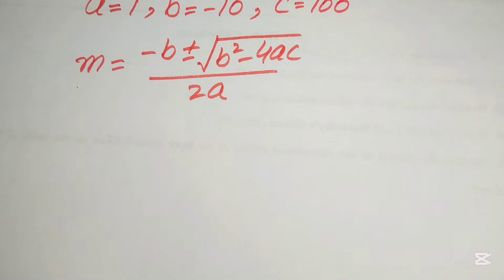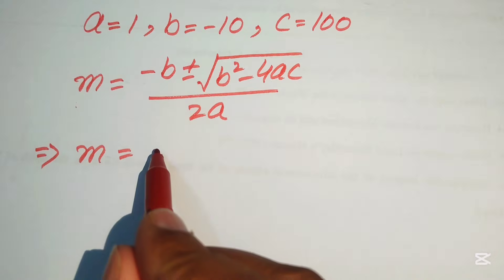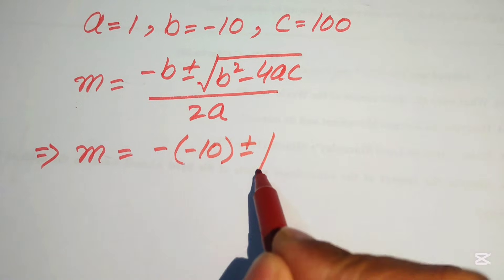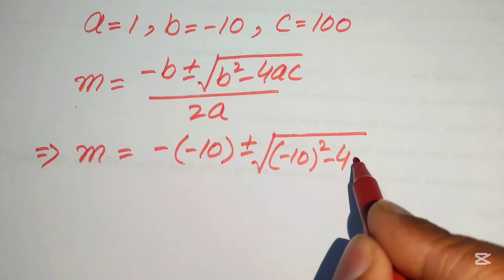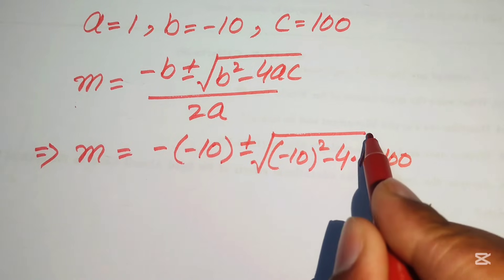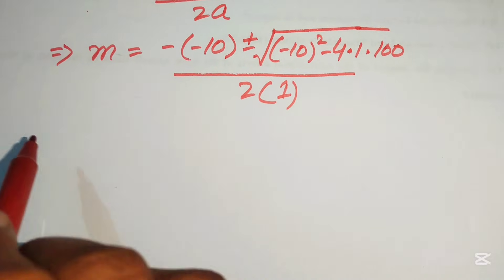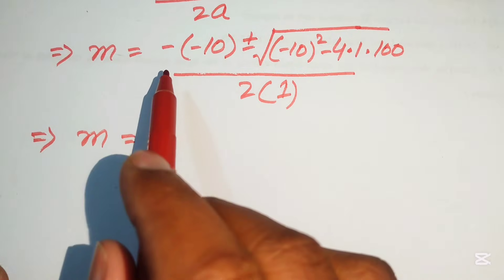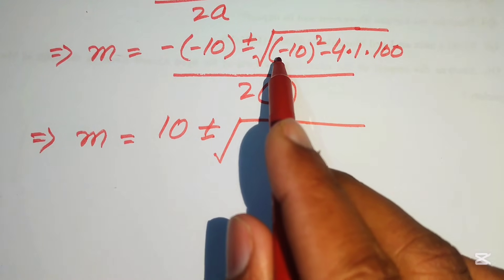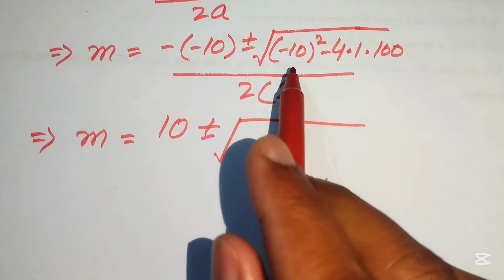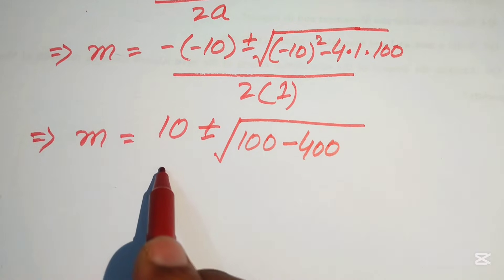Substituting the values of a, b, and c into the quadratic formula: b is minus 10, so we have minus times minus 10, plus or minus the square root of minus 10 squared minus 4 times 1 times 100, divided by 2 times 1. Simplifying: minus times minus gives plus 10, 10 squared gives 100, and 4 times 100 gives 400, divided by 2.